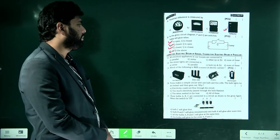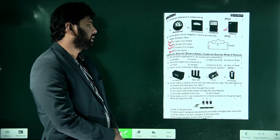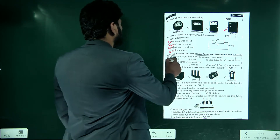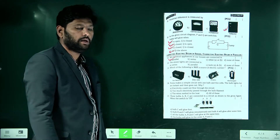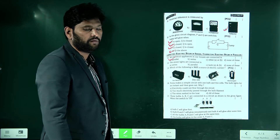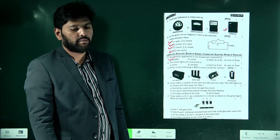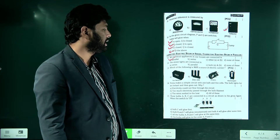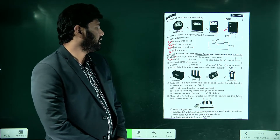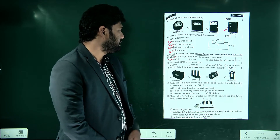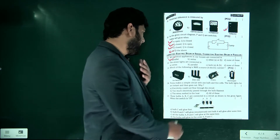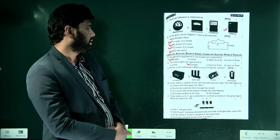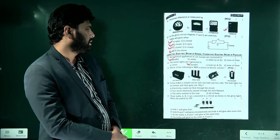All electrical appliances in our house are connected in parallel. In a parallel connection, if anything goes wrong with one appliance, the remaining ones will still work. Street lights are also connected in parallel — they cannot be in series connection.